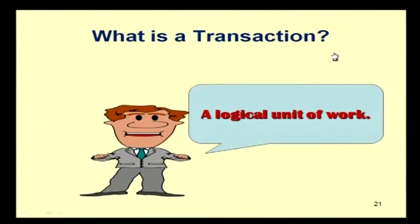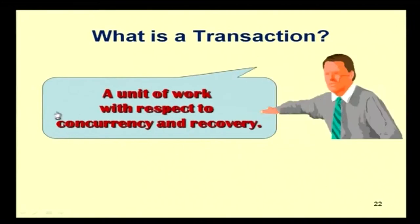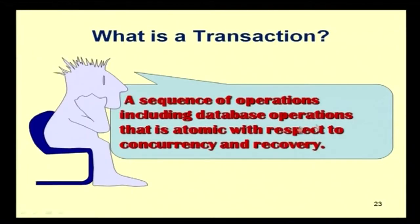A transaction is a logical unit of work. When we talk about concurrency and recovery, we are not talking about individual operations like read or write — we are talking about a set of operations which forms a transaction. A transaction is atomic with respect to concurrency and recovery: if executed, it is executed as a whole; otherwise, it will roll back to the original consistent state.